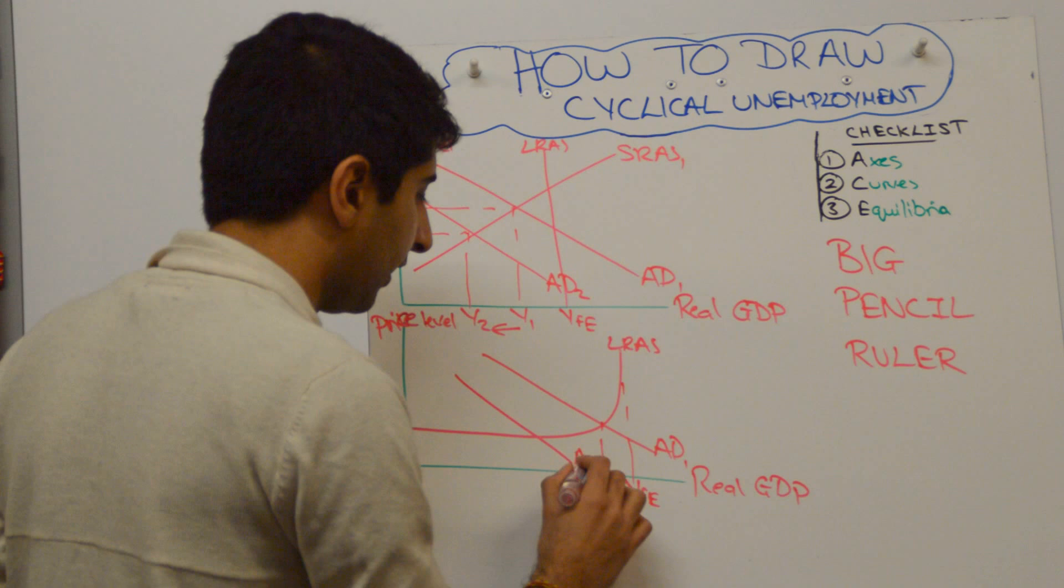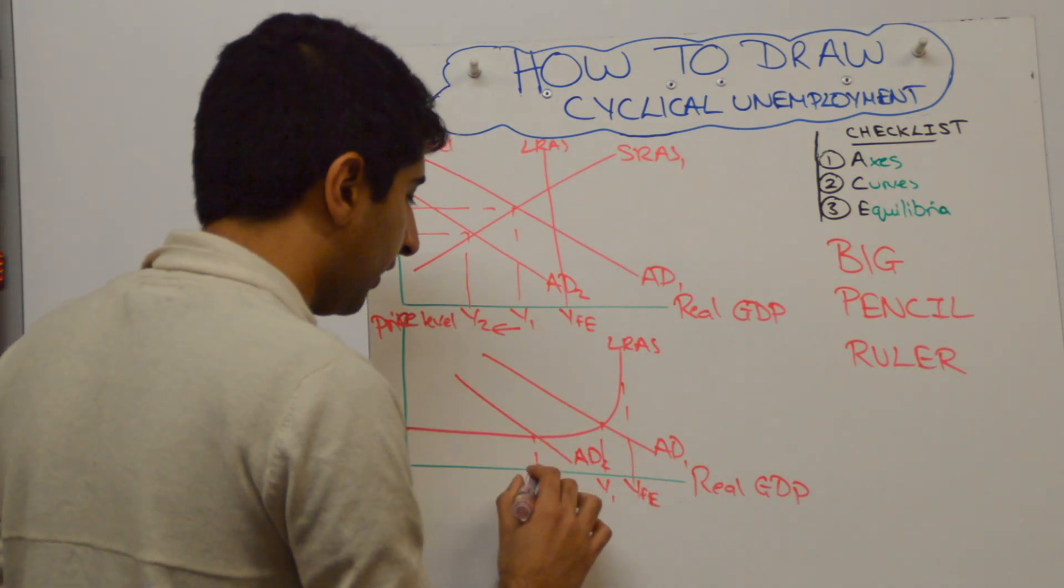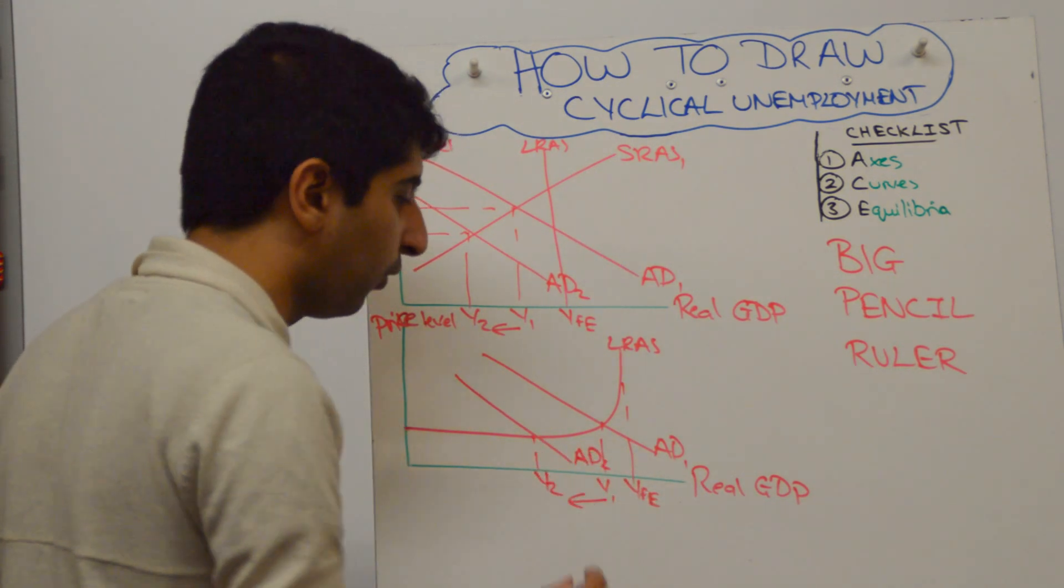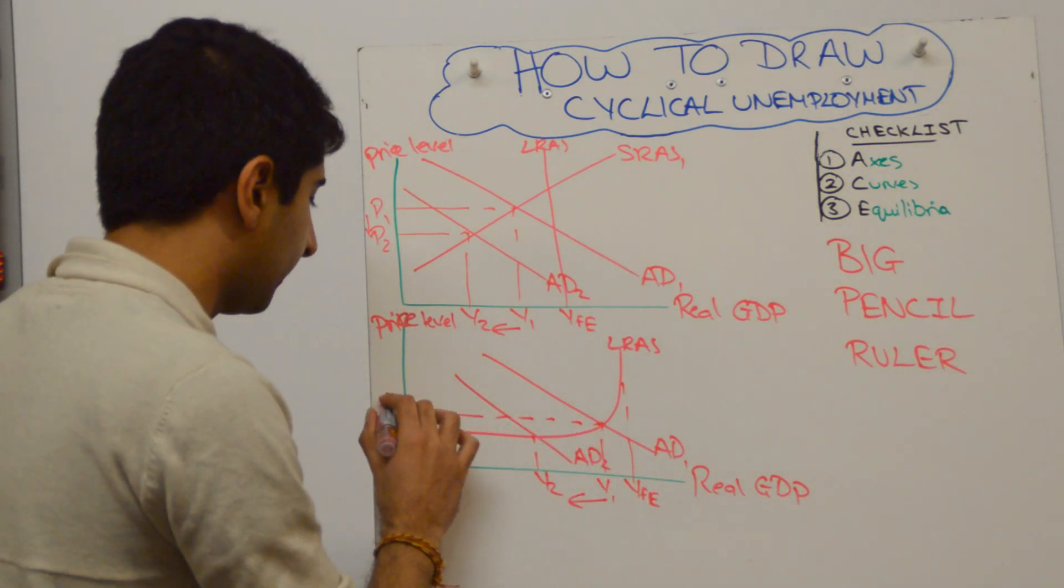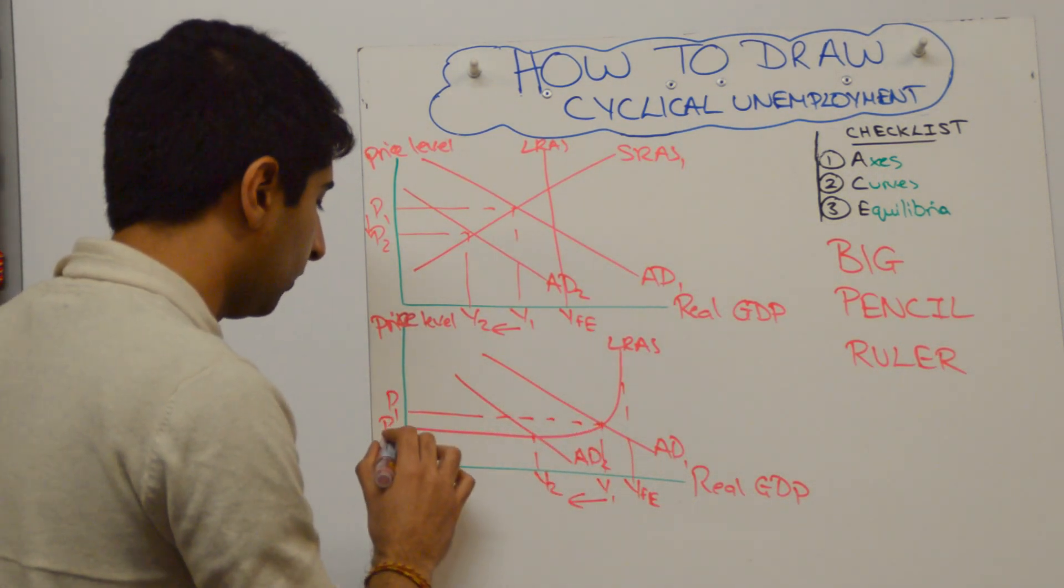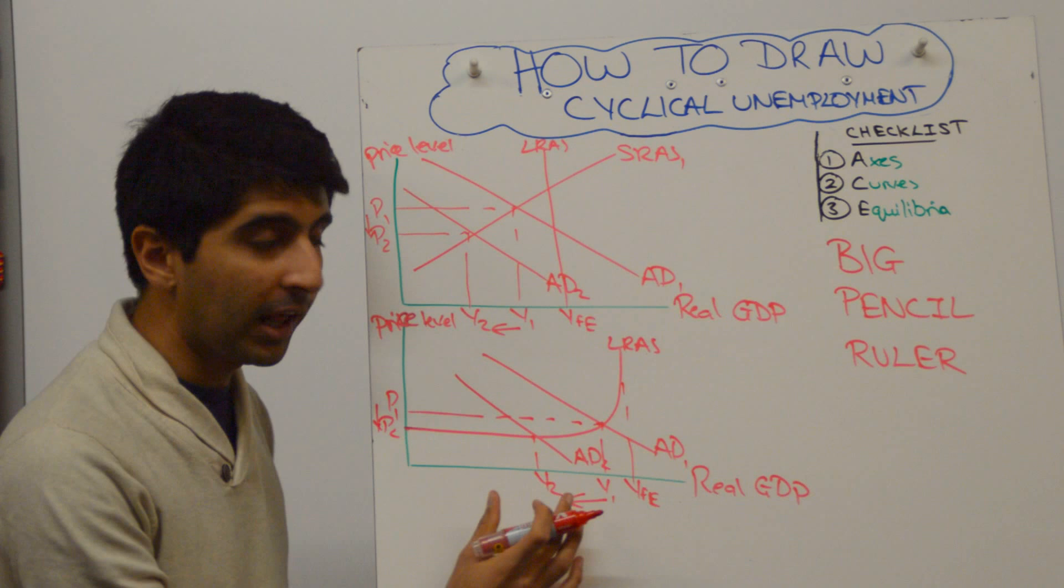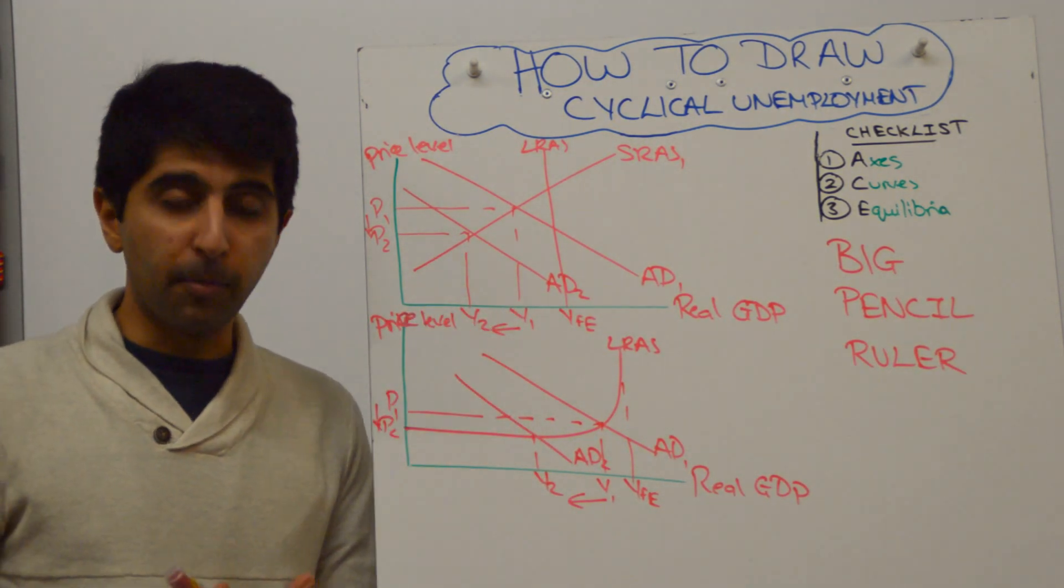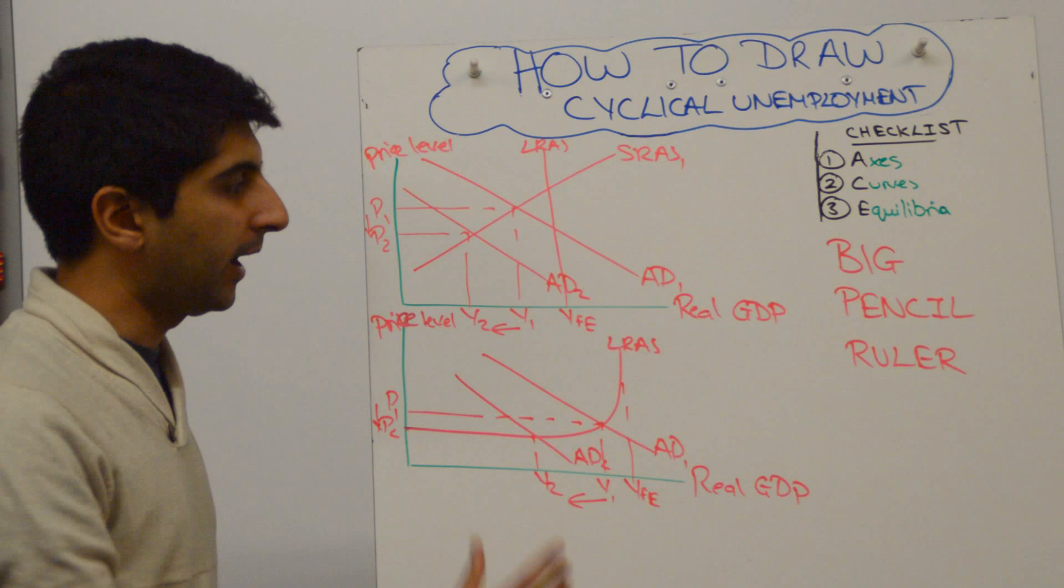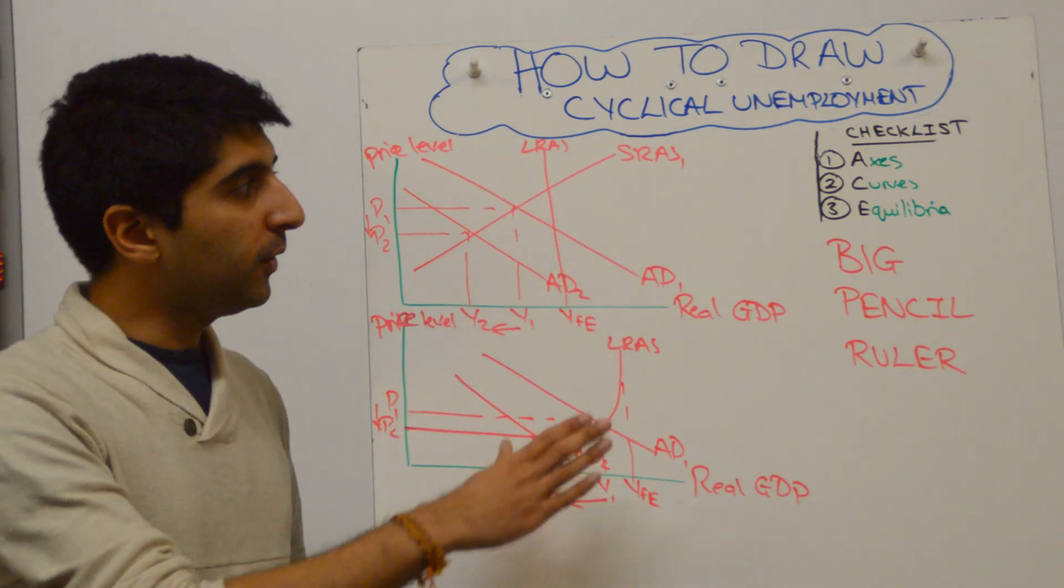I would shift aggregate demand to the left and show that as a result, there's been a fall in actual growth from Y1 to Y2 and a fall in the price level from P1 to P2. The most important thing is that fall in output, which in the same way as it did above, implies that there is going to be more cyclical unemployment as the economy enters a recession. So that's how you can do it,